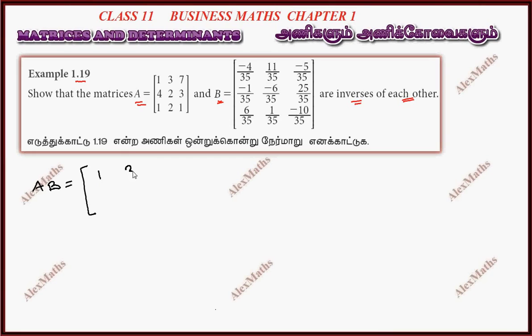So matrix A is: first row 1, 3, 7; second row 4, 2, 3; third row 1, 2, 1.